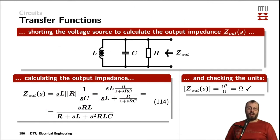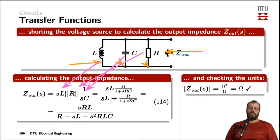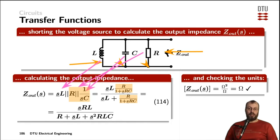For the output impedance, we look into the circuit from the right-hand side and short-circuit the voltage source. This pulls the inductor down to the same ground as the capacitor and resistor, meaning the circuit is now a parallel connection of the inductor impedance, the resistor impedance, and the capacitor impedance. We can reuse the R||(1/SC) fraction from before, and that result is then placed in parallel with the impedance of the inductor.